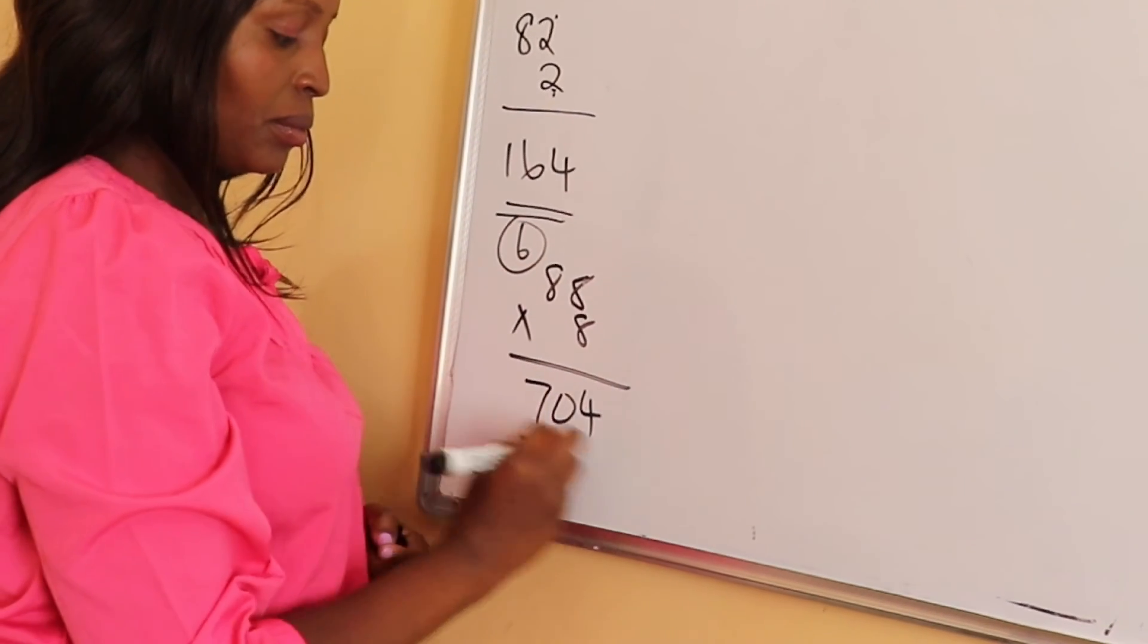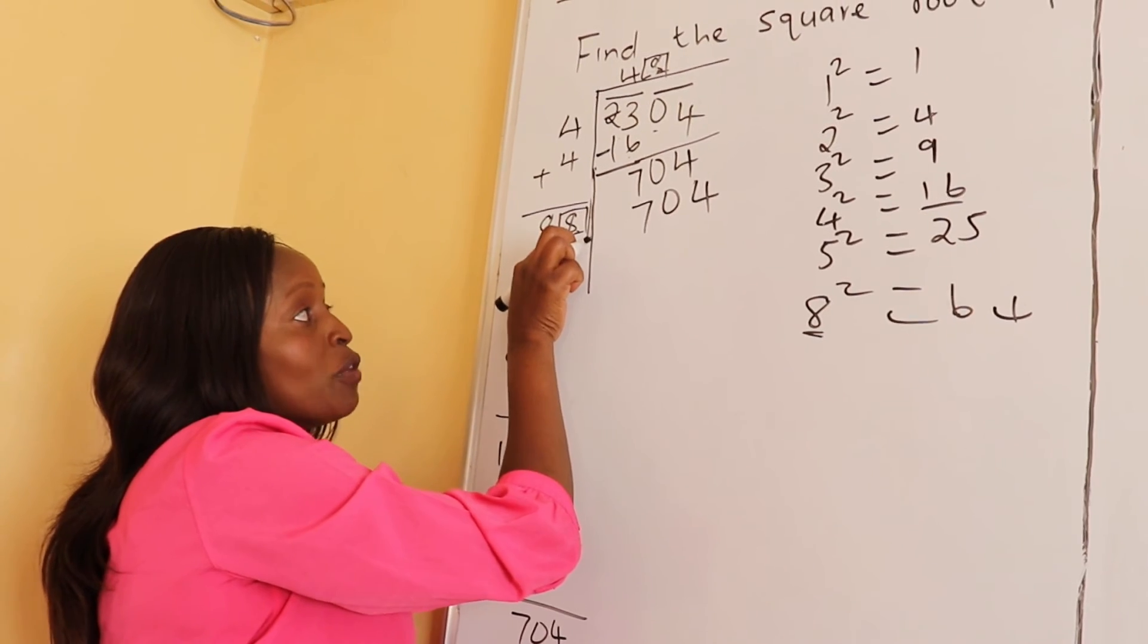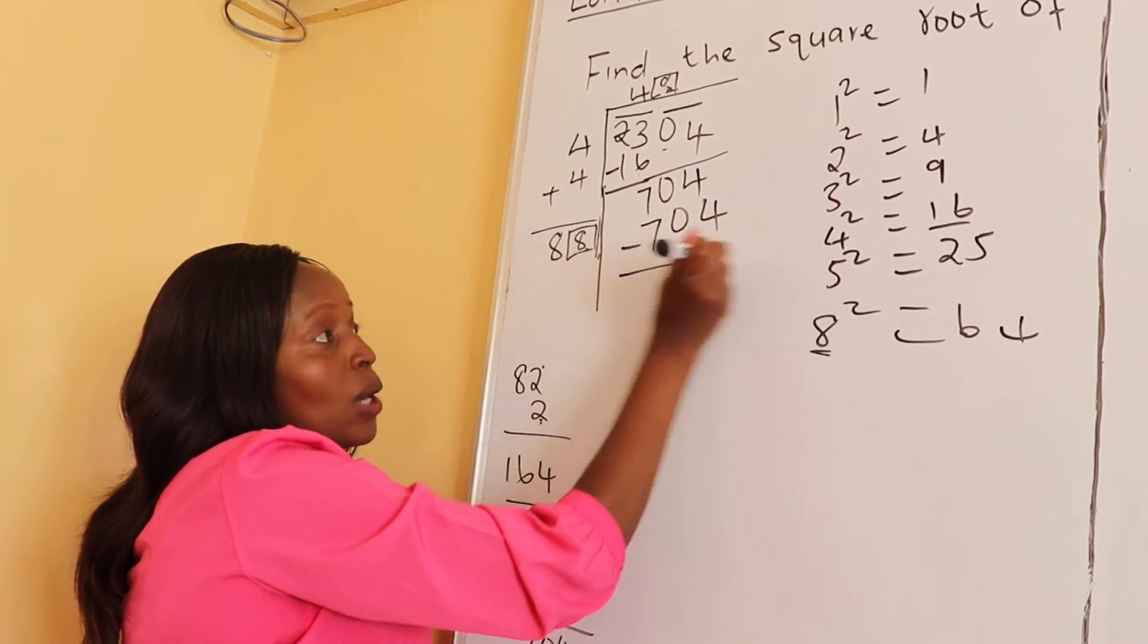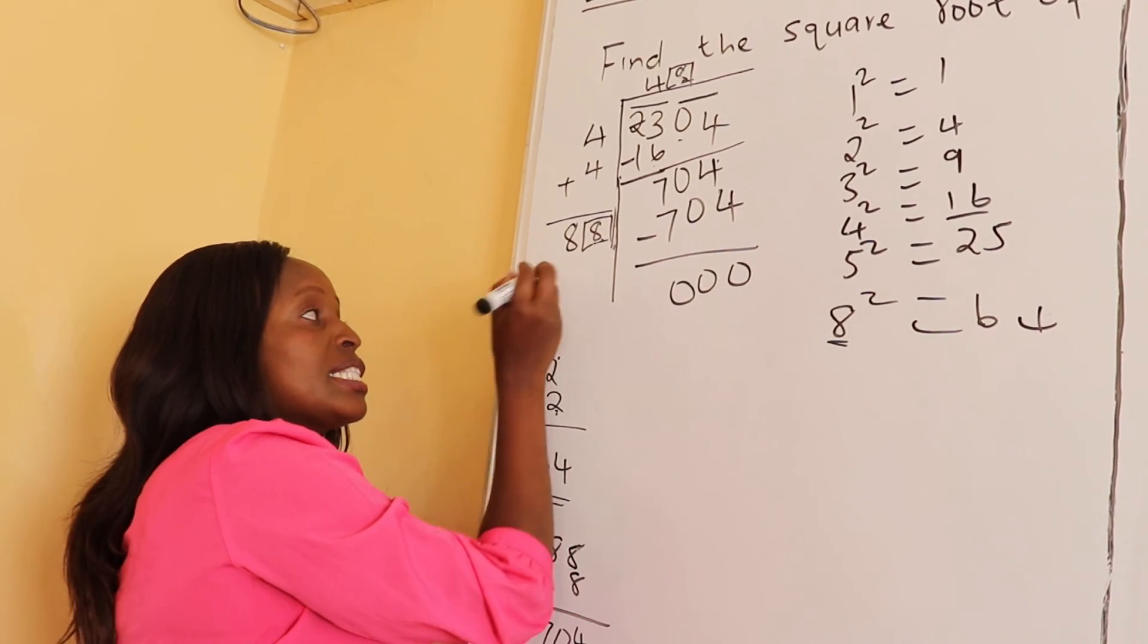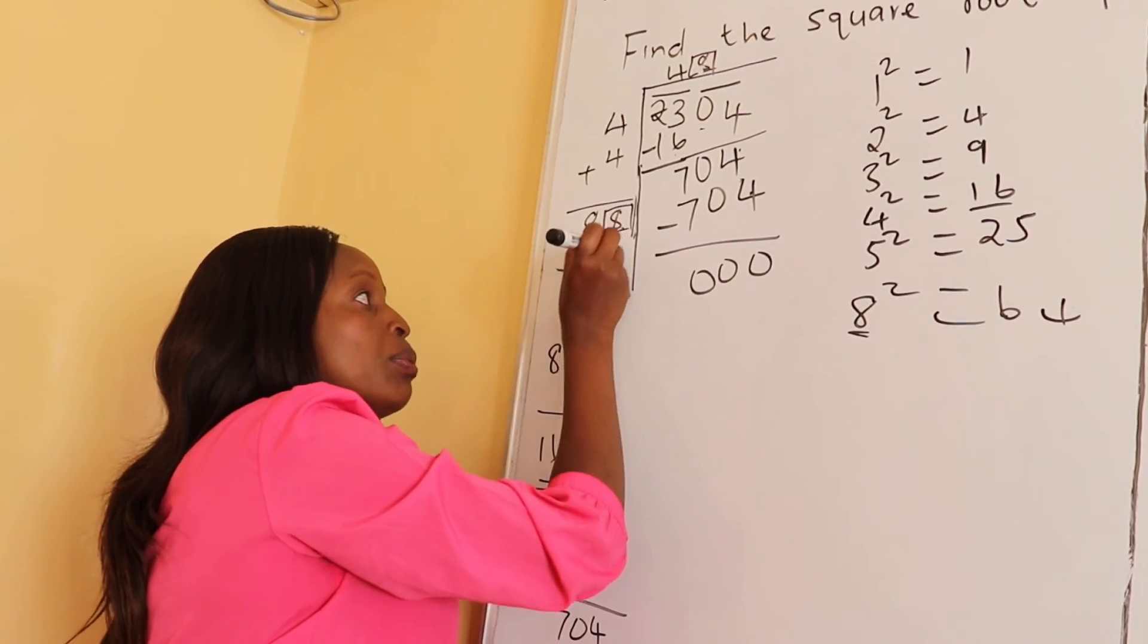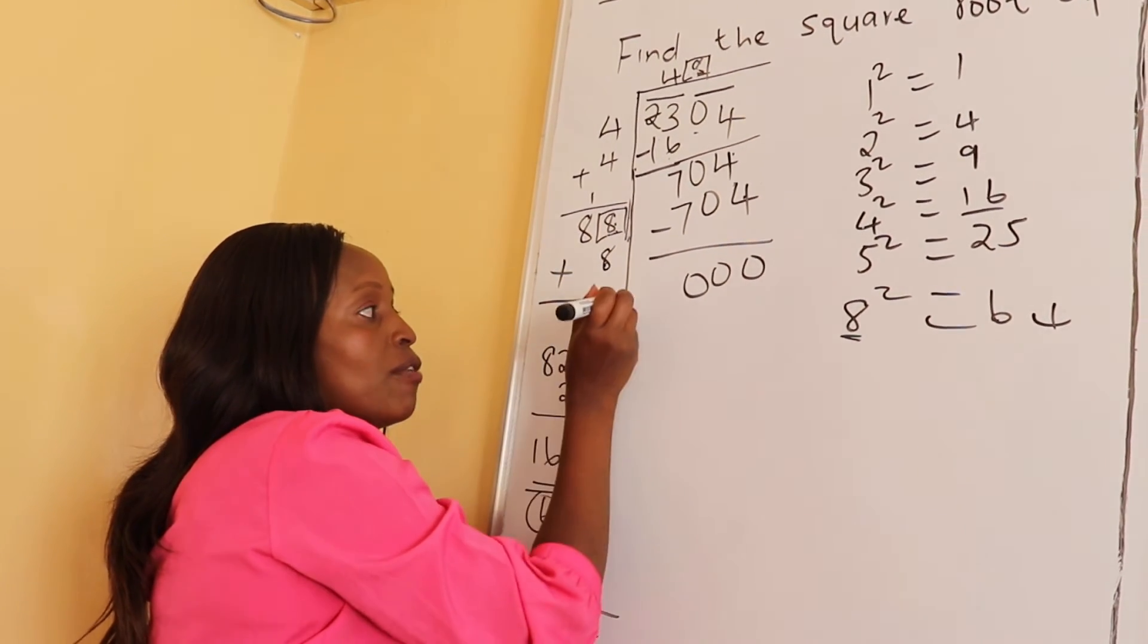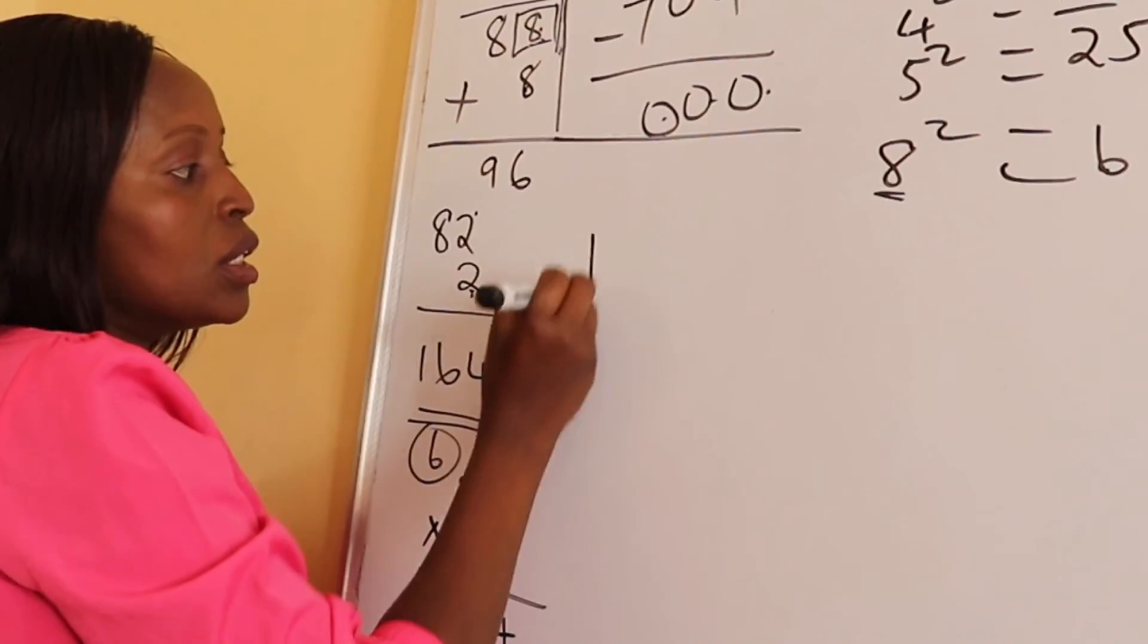Therefore here it's 704 because of digit 8 here and digit 8 here. Inside we take away: 4 take away 4, 0, 0, 0. But inside we also add the quotient, and our quotient here is 8. So we put 8 here, 8 plus 8, 16 carry 1, 9. As you can see, here we have 000, and the square root of 2304 is equal to 48.